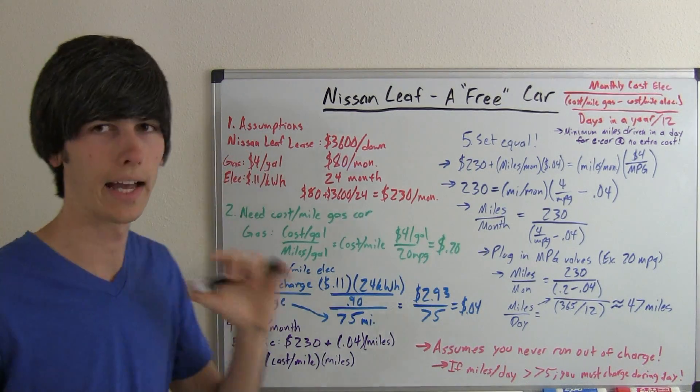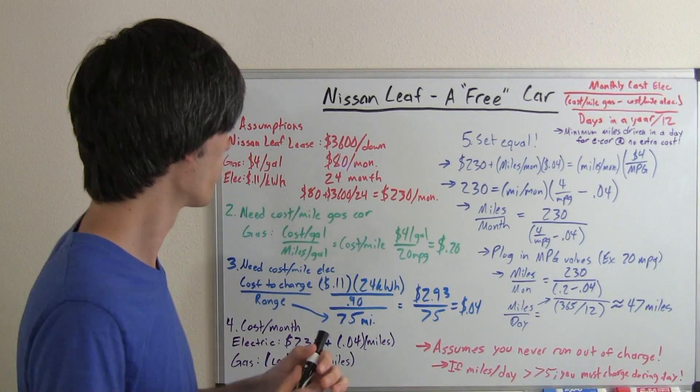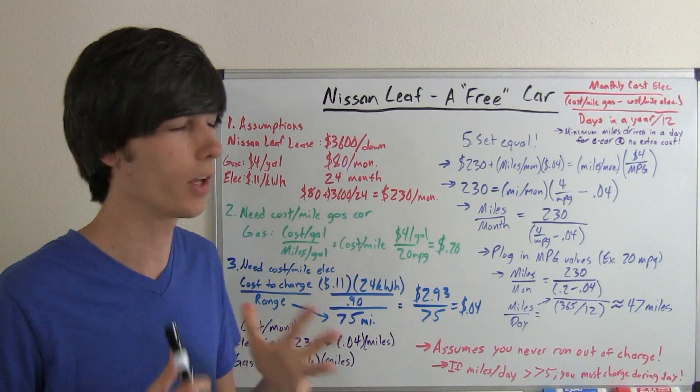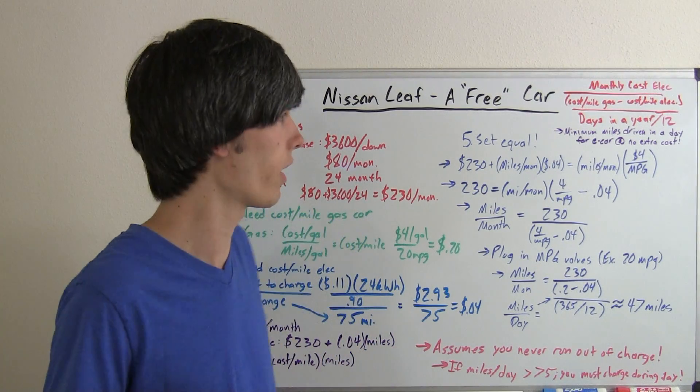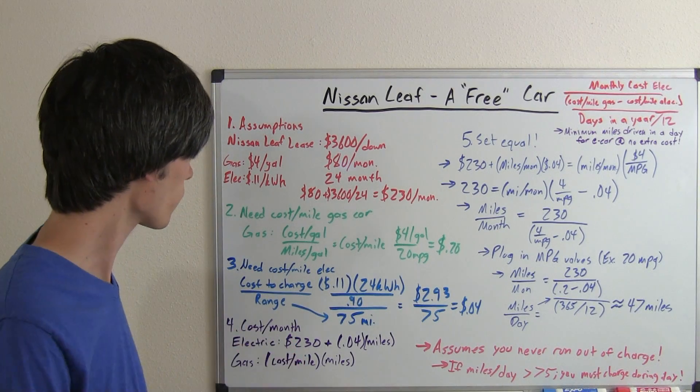We're going to go with the assumption that gas is $4 per gallon, which could be high for some of you, it could be low for some of you. That variable could change and you can do the math for yourself if you want to change that a little bit. Electricity, 11 cents per kilowatt hour, also kind of a high estimate for me, but for some people that may be too cheap.